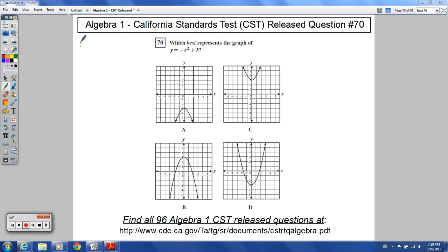Welcome to Algebra 1 CST release question number 70. It says, which best represents the graph of y equals negative x squared plus 3?